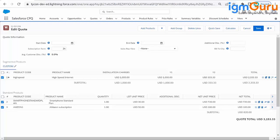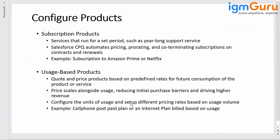This ends the usage-based product lesson. It's a very simple concept — it's like a postpaid billing where you charge the customer according to their usage. That is a usage-based product. Multi-dimension pricing charges customers per different segments, allowing changes to quantity and discount. A normal subscription product charges based on the term decided on the product.